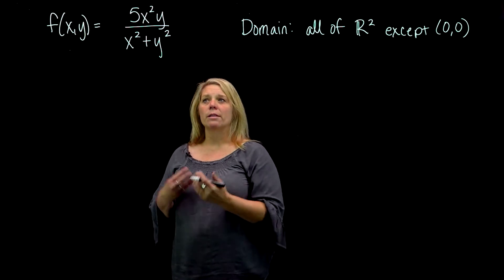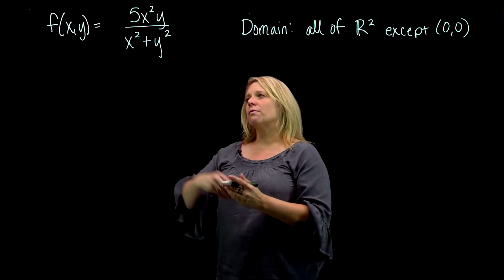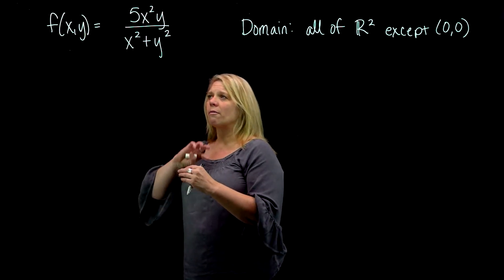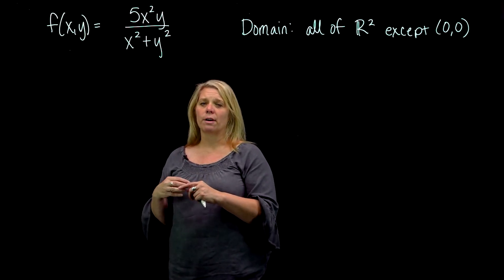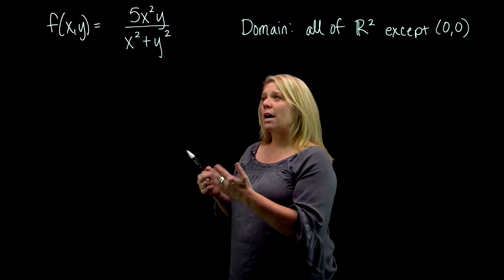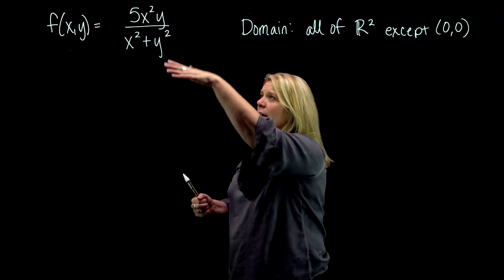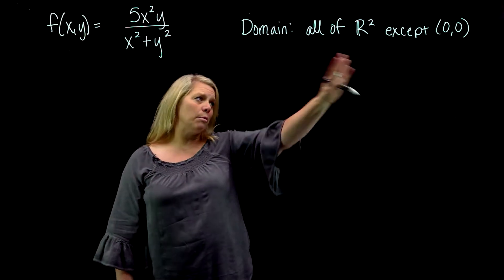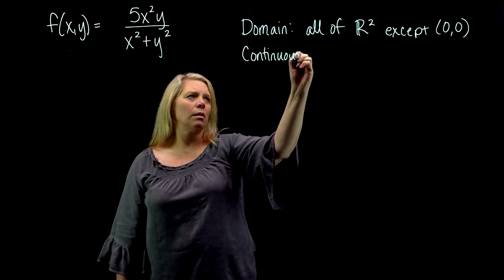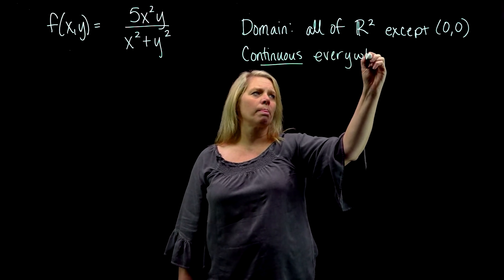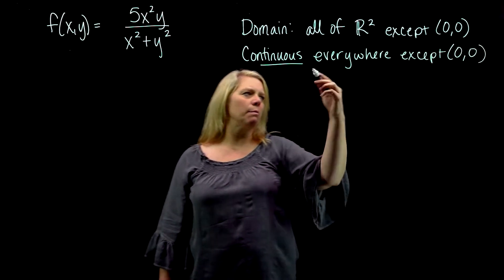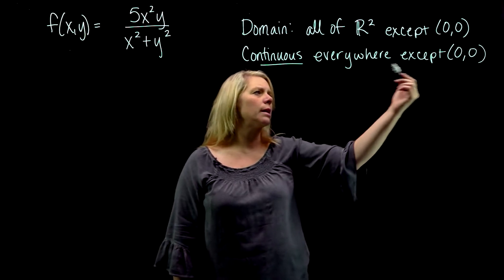Something else to talk about might be where this function is continuous. So this function is continuous everywhere on its domain. So we have a theorem from Calc 1 about continuous rational functions and where they are continuous. It's a rational function in two variables. So rational function is continuous everywhere that its denominator is not 0. So that would be everywhere except the origin. This function is continuous everywhere except the origin. And if we want to be a little bit more specific here, we might say on all of R², except the origin.